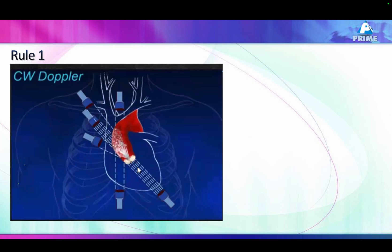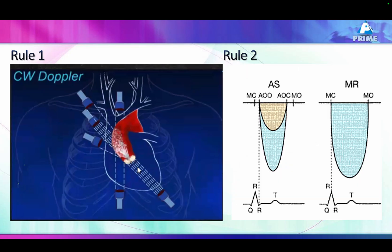How do we take a gradient across the valve? The transducer beam should be parallel with the jet. It may not be parallel when you are doing it from an apical four-chamber view — you might have to go to parasternal views, a suprasternal view, or a subcostal view, just to get aligned. Because if you are not aligned, you might get a lower gradient than you actually have.